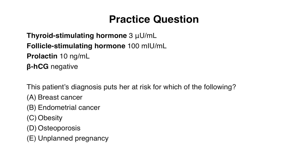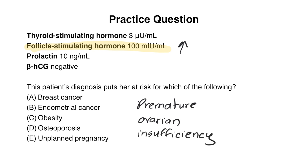Her thyroid hormone (TSH) is 3, which is normal. Her FSH is 100, which is very elevated, especially for someone who is not post-menopausal. Her prolactin level is 10, which is normal, and her beta-HCG is negative — a negative pregnancy test. Given the elevated FSH for a woman at her age, we're concerned about something going on at the ovaries — a premature ovarian insufficiency. Normally it would help to also have an estrogen level, but the elevated FSH makes a hypothalamic cause less likely, since that would produce a low FSH level.